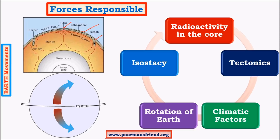The rotation of the earth produces two important forces: centripetal force, which is maximum at the equator, and Coriolis force, which is an inertial force acting on objects moving on the earth's surface or even within its interior. Coriolis force deflects an object towards its right in the northern hemisphere and towards its left in the southern hemisphere.